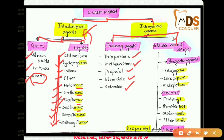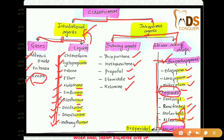The slower-acting IV drugs are subdivided into three groups. The first group is benzodiazepines, which includes diazepam, lorazepam, and midazolam. The second group is opioids, which includes fentanyl, remifentanil, sufentanil, and alfentanil — you can remember these by the '-nil' ending. The last group is neuroleptics, with only one drug: droperidol.